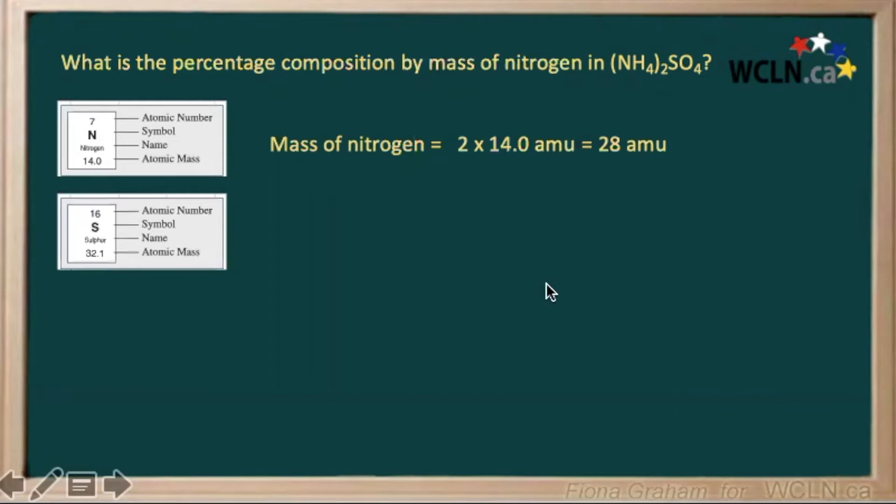Now to calculate the mass of our whole ammonium sulfate, we need to look at the mass of our sulfur. We have one unit, one element of sulfur, and it has a mass of 32.1 atomic mass units.